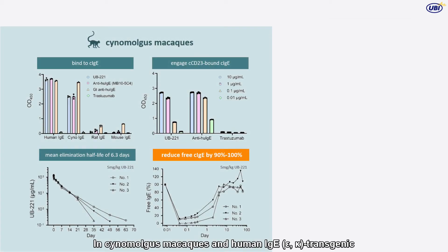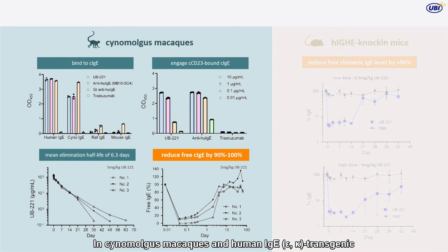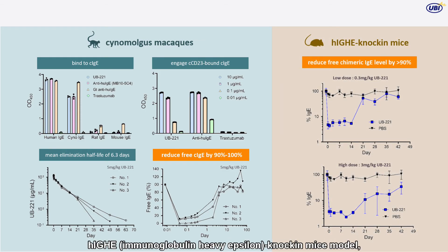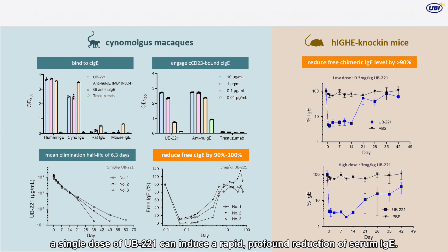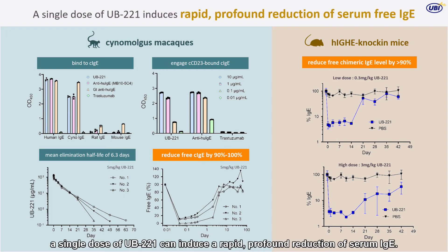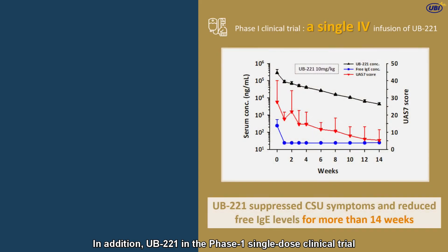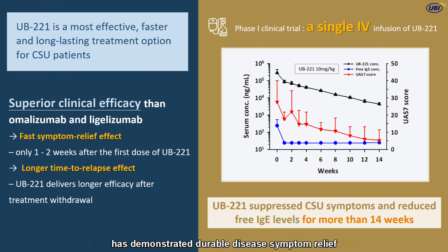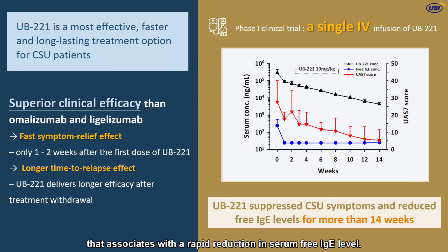In cynomolgus macaques and a human IgE transgenic knock-in mouse model, a single dose of UB221 can induce a rapid, profound reduction of serum IgE. In addition, UB221 in the Phase I single-dose clinical trial with chronic spontaneous urticaria patients has demonstrated durable disease symptom relief that associates with a rapid reduction in serum-free IgE level.